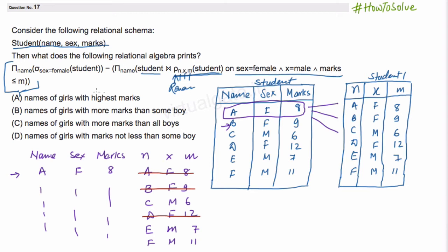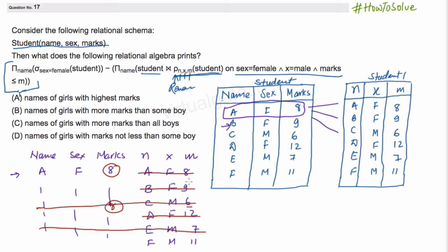Now, marks should be less than or equal to m. For this tuple in this case, marks will be 8 and m is 6, so this condition is not true and we will eliminate this tuple. Similarly, for this tuple marks is 7, so this tuple will also be eliminated. So now our output will be 'A' as we are filtering A here.